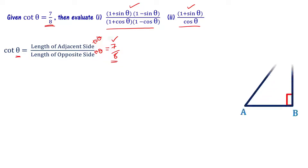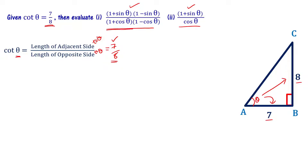In this triangle, for angle theta, the opposite side BC has value 8 and the adjacent side AB has value 7. Now we can evaluate the sin and cos functions — sin theta and cos theta — once we find the hypotenuse.